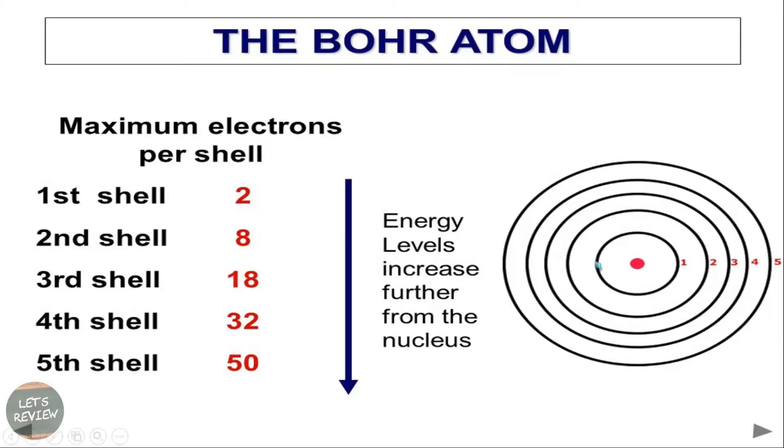For example, for the first shell, which is this one, the maximum number of electrons it can hold is only two. So if that is a lithium, then you have to place the remaining electron to the second orbital because the first orbital can only hold two electrons, that's maximum number. Then the second shell or second orbital, the maximum number is eight, on the third is 18, on the fourth is 32, and in the fifth, it's 50. So as you can see, energy level increases as it gets further from the nucleus. This is the nucleus.